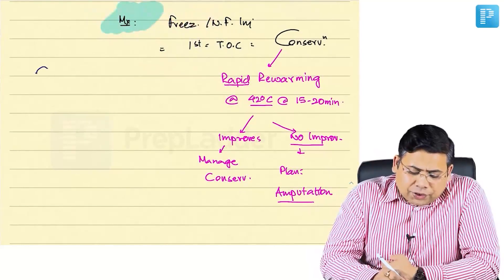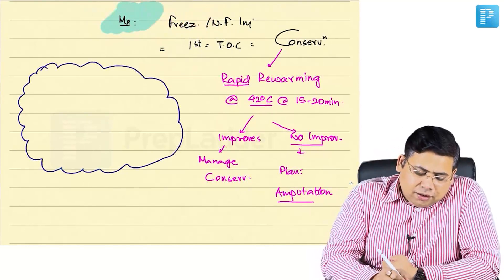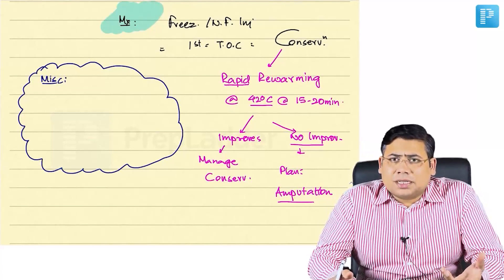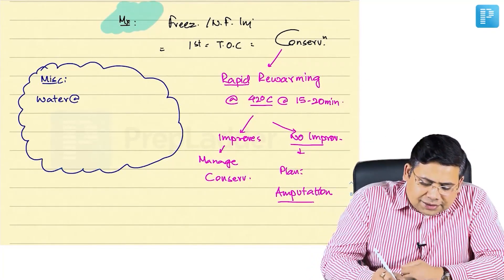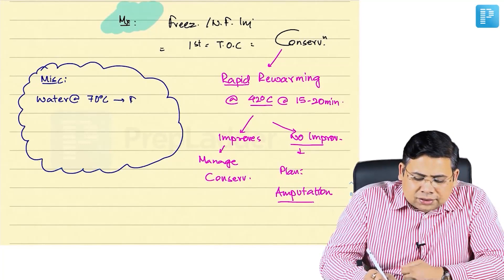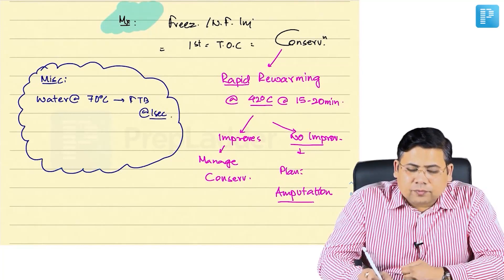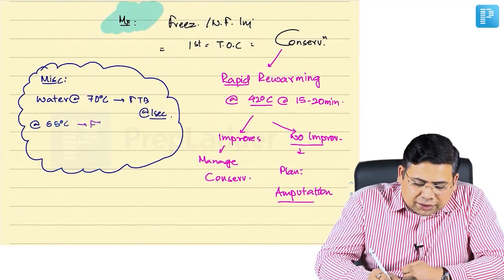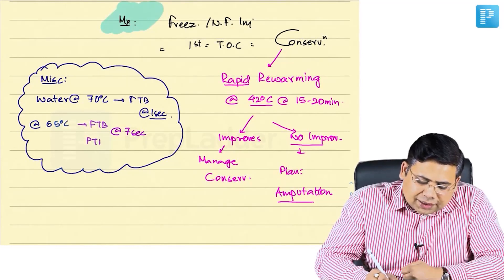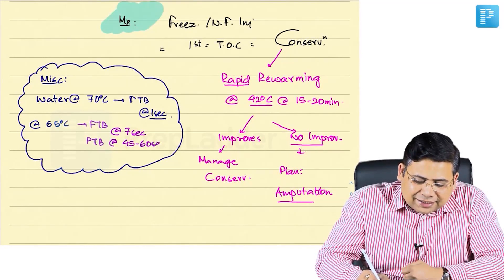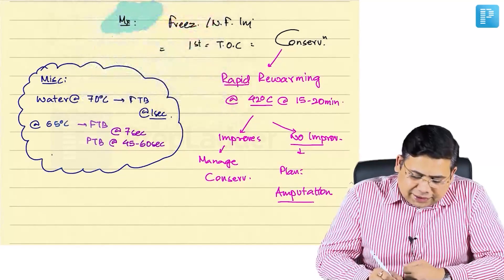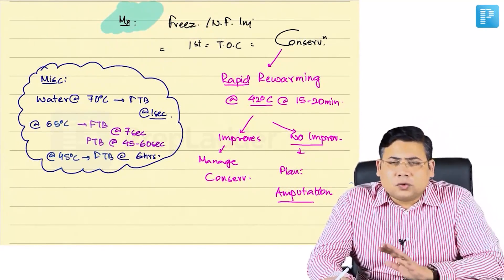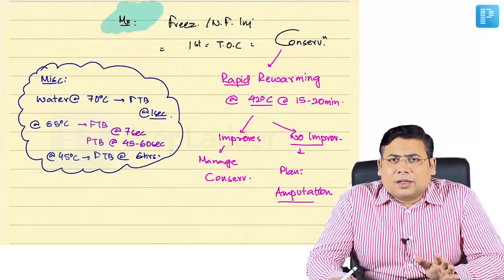How does water temperature behave with the body? Water at 70 degrees centigrade causes full thickness burn in just one second. Water at 65 degrees centigrade causes full thickness burn in 45 to 60 seconds. Water at 45 degrees centigrade will cause full thickness burn in roughly 6 hours. So 42 degrees centigrade is nothing to worry about, and 15 to 30 minutes of re-warming is completely safe.